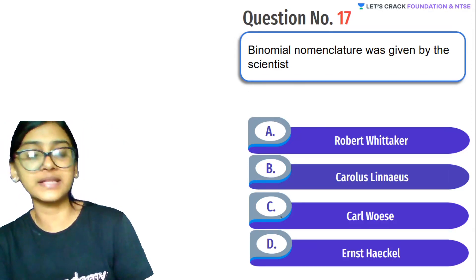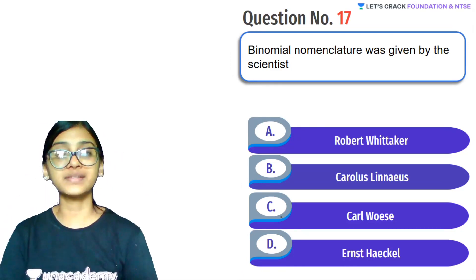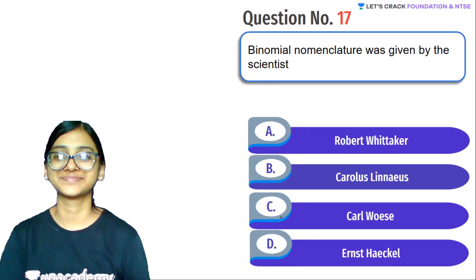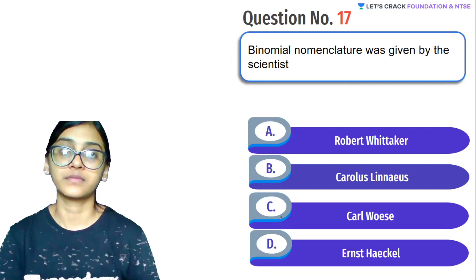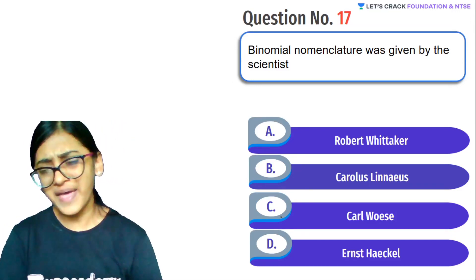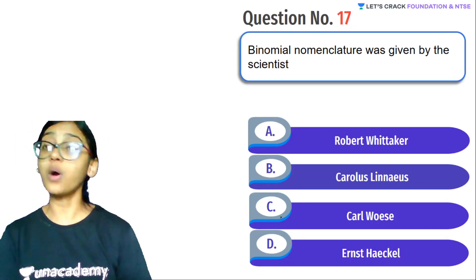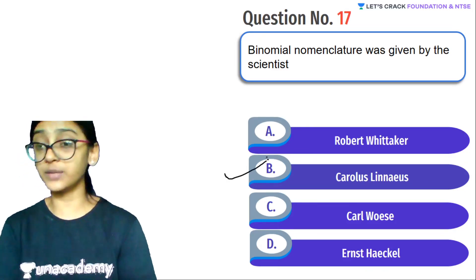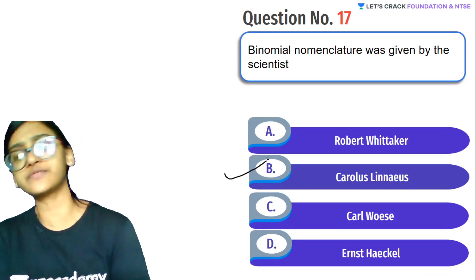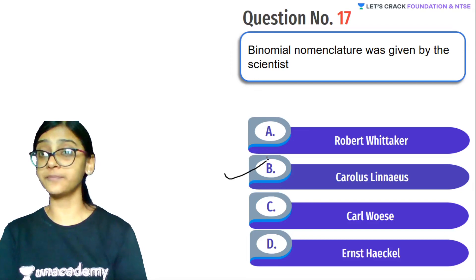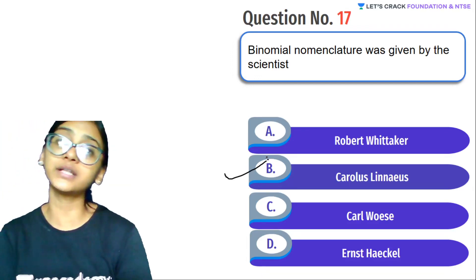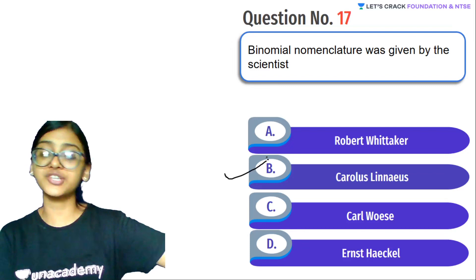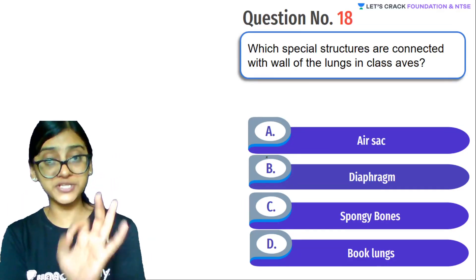Next question: Binomial nomenclature was given by which scientist? Binomial means two names — genus and species, for example Homo sapiens, Canis familiaris. Answer quickly in the comment section. Yes, you are absolutely correct — Carolus Linnaeus gave binomial nomenclature. He also gave the two-kingdom classification system. Robert Whittaker gave the five-kingdom system. Carolus Linnaeus gave a six-kingdom system. Ernst Haeckel gave the three-kingdom system.